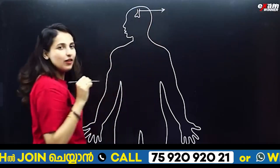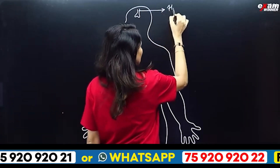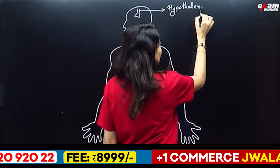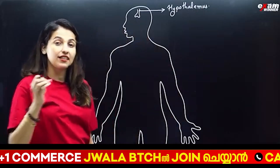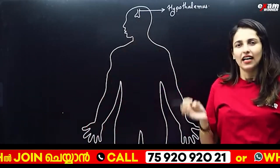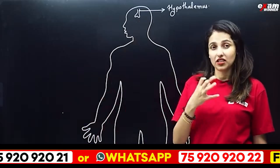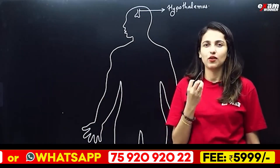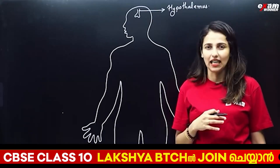Hypothalamus is a gland. In these glands, they are not secretions — they don't have ducts. They have blood vessels or glands instead.